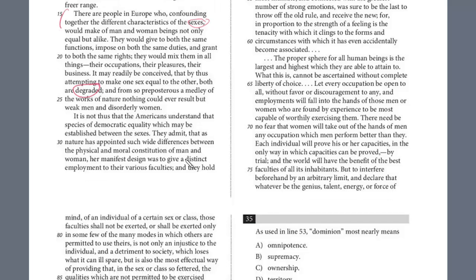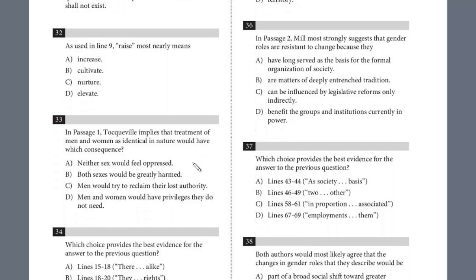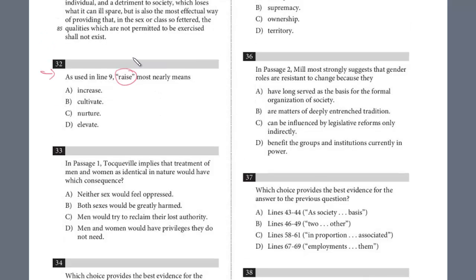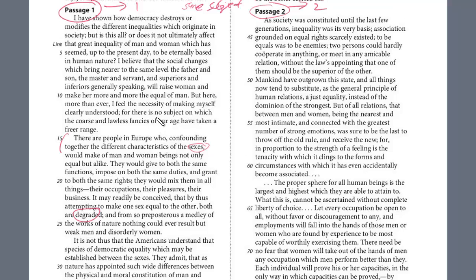So let's start with the questions. We're only doing passage one. Question 32 is a vocab in context — the word is 'raise.' Raise is a pretty straightforward word, so usually it might have a secondary meaning. Let's take a look at line nine and try to predict what 'raise' means in the context of the passage.